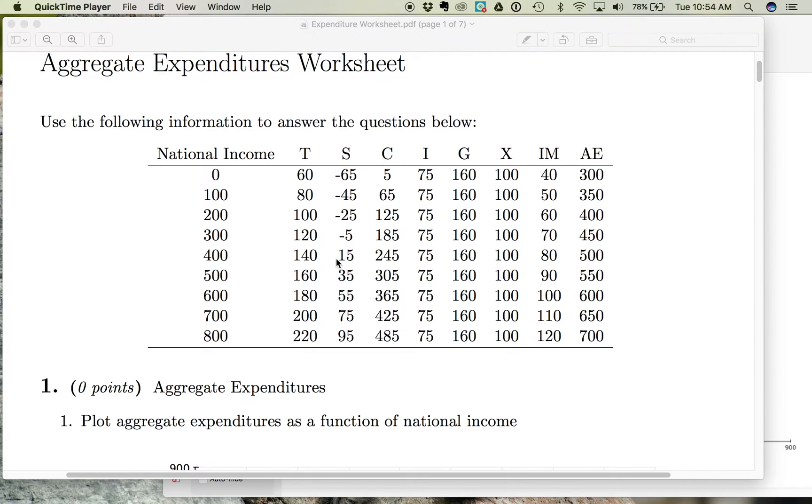We've looked at total spending in the economy based on the income level. Let's break aggregate expenditures down into its parts: C plus I plus G plus X minus IM.